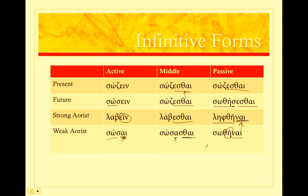No augment again. So with infinitives: in the middle, we're all going to have that -sthai. In most of the actives, we're going to have that -an. And the aorist passives have this new ending, -nai. And remember, aorist — no augment.